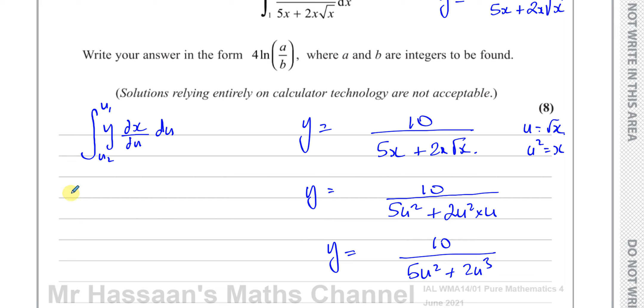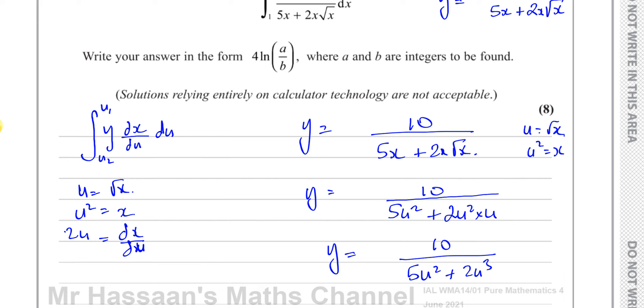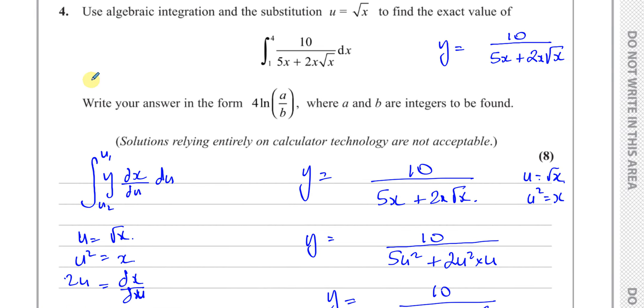And we need to find what dx/du is. We have u is equal to the square root of x, so u squared is equal to x. So dx/du, if I differentiate this with respect to u, I'm going to get 2u. I also have to change my limits. When x equals 4, u is equal to the square root of 4, which is 2. And when x equals 1, u is equal to the square root of 1, which is 1.